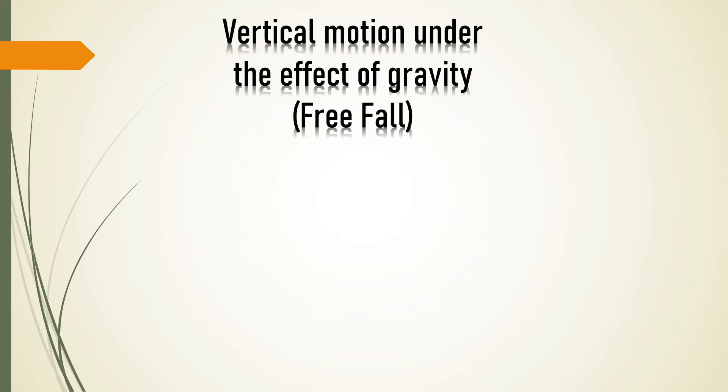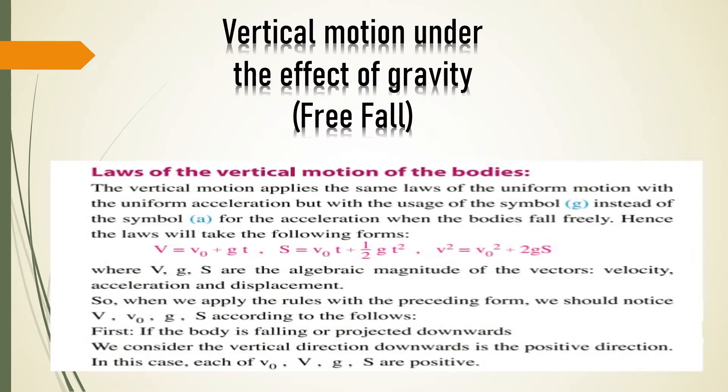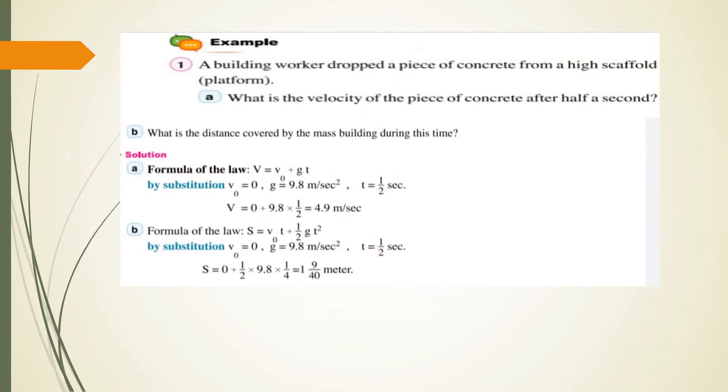Hello. Now, vertical motion under the effect of gravity, free fall. The rules of Newton: V equals V₀ plus gt, and S equals V₀t plus half gt squared, and V squared equals V₀ squared plus 2gS.